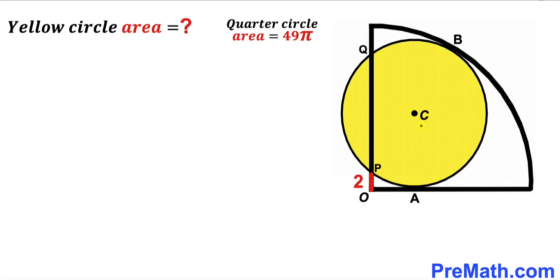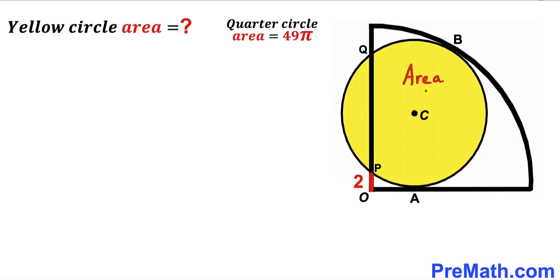Welcome to Pre-Math. In this video we have a yellow circle with center C and a quarter circle with center O put together as shown in the diagram, such that points A and B are their points of tangency. Moreover, they intersect each other at points P and Q, and this tiny segment OP is 2 units. Our task is to calculate the area of this yellow shaded circle, given that the area of the quarter circle is 49π square units.